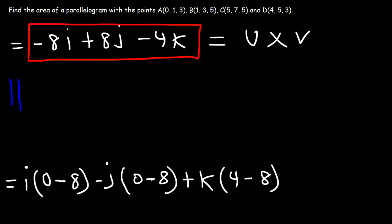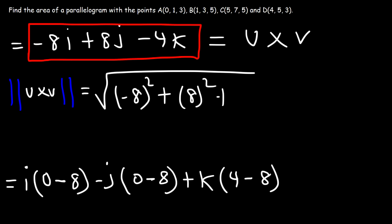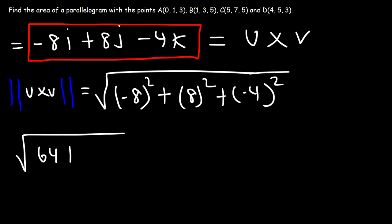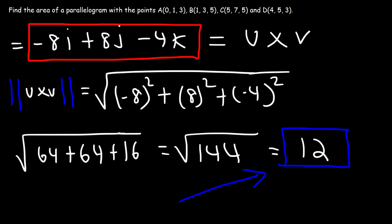Now the last thing that we need to do is we need to calculate the magnitude of this vector. So it's going to be the square root of negative 8 squared plus 8 squared plus negative 4 squared. Now 8 squared is 64, and 4 squared is 16. So 64 plus 64, that's 128, plus 16, that's 144. And so the square root of 144 gives us a nice number, which is 12. So this is the area of the parallelogram.